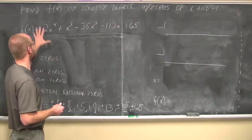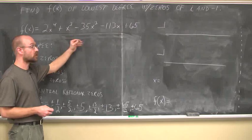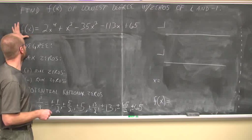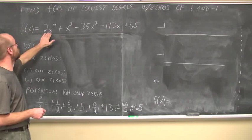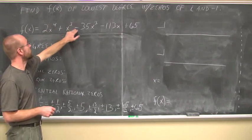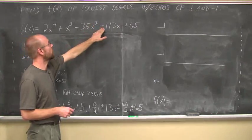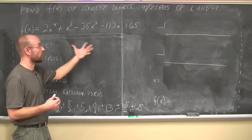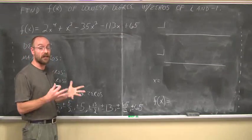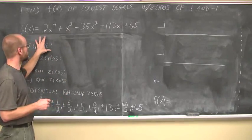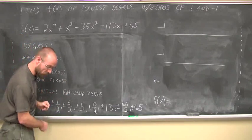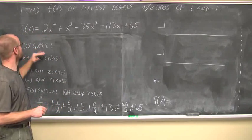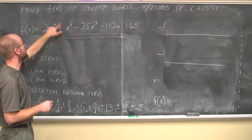Next, we're going to apply these concepts to actually solve a higher-order polynomial. We have f of x equals 2x to the fourth plus x cubed minus 35x squared minus 113x plus 65. We can see these coefficients are real numbers — not very nice numbers, but real. Let's first assess the polynomial. The degree is fourth, so we're working with a fourth-degree polynomial.